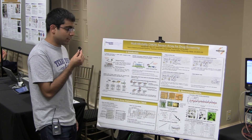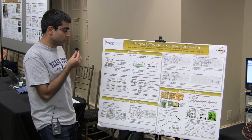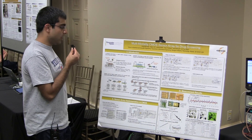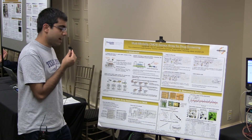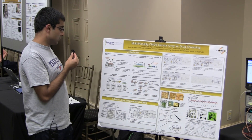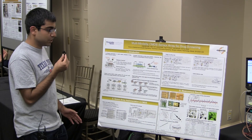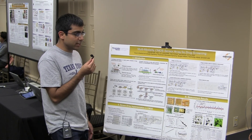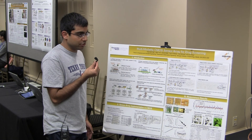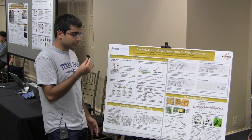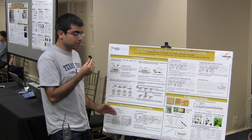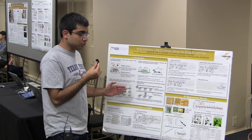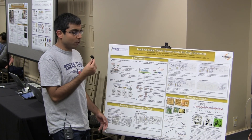We have four essential modalities that we are trying to measure. The first is voltage recording, which is really useful if you wanted to do action potential measurements of neurons or cardiomyocytes. The second key modality is impedance mapping, which is really useful if you wanted to check if a cell is attached to a particular surface — for example, if you have a cancer drug and you are testing its efficacy in maintaining cell attachment to an extracellular matrix.